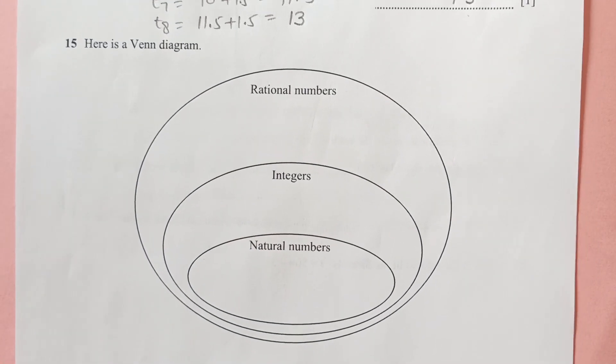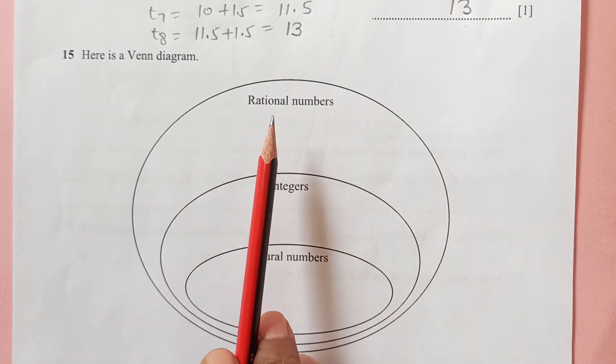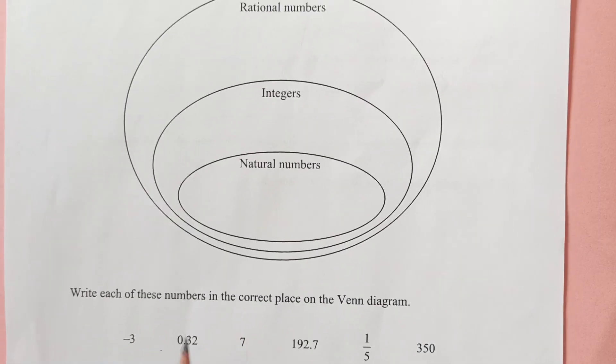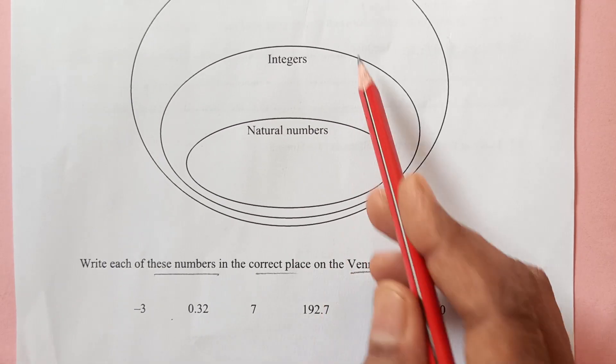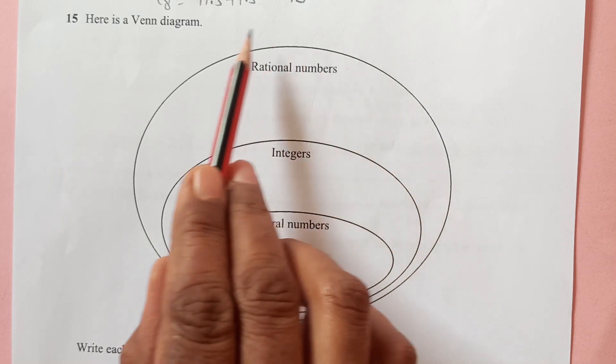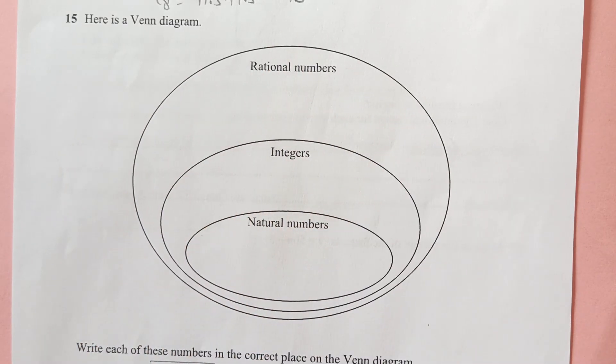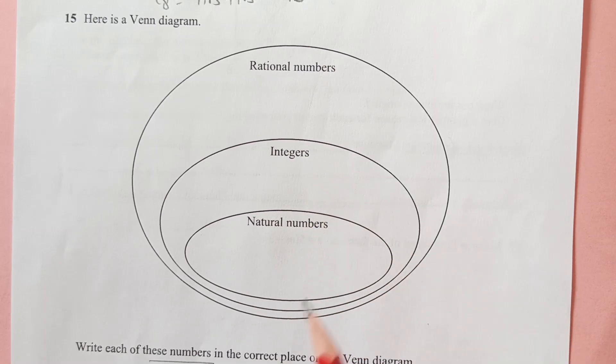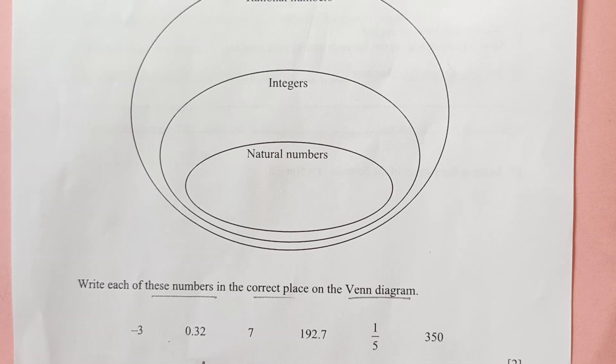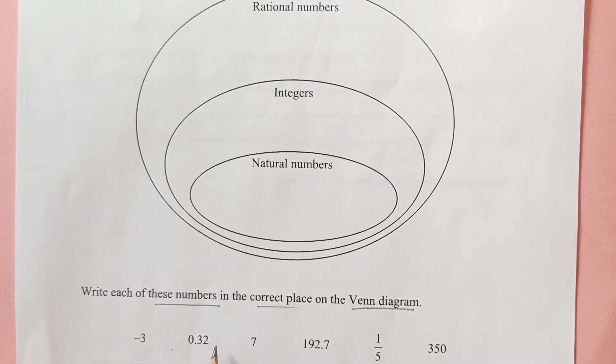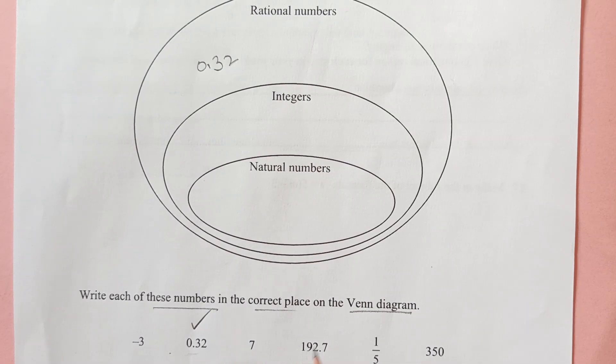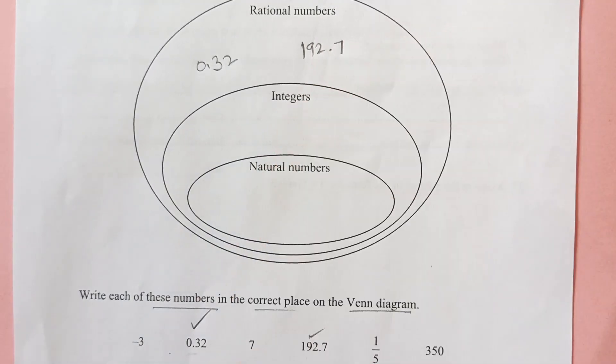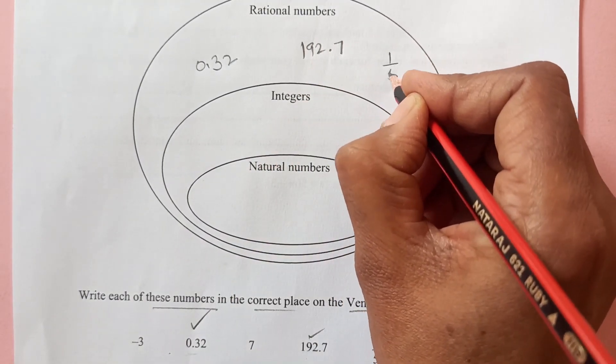Now number 15, here is a Venn diagram. You see this Venn diagram, we have rational numbers, integers, natural numbers. So write each of these numbers in correct place on the Venn diagram. We are given these numbers, we are going to put them here. So first of all, we will see this rational number. Every number is included in rational number, but who are not there in integers. So rational numbers are the numbers that can be written as a fraction. So this 0.32 can be written as a fraction.